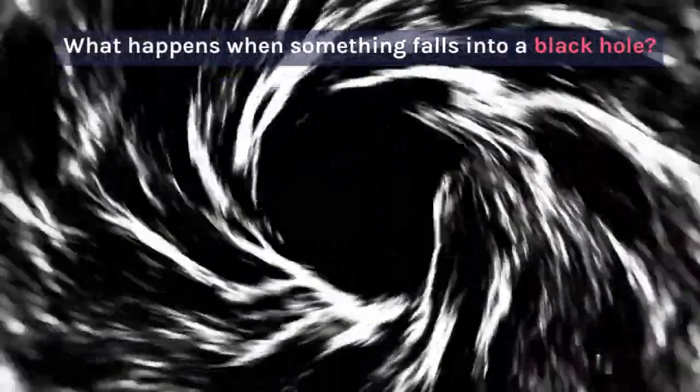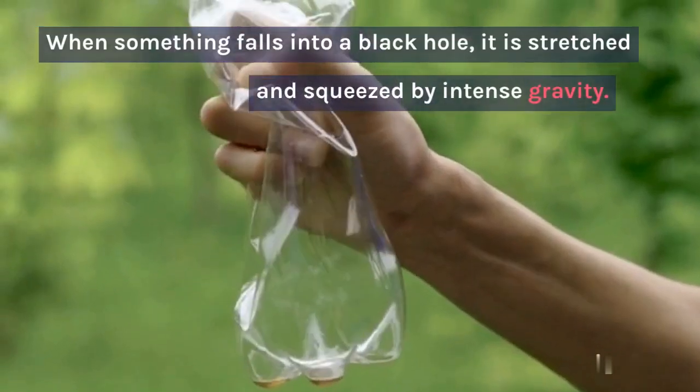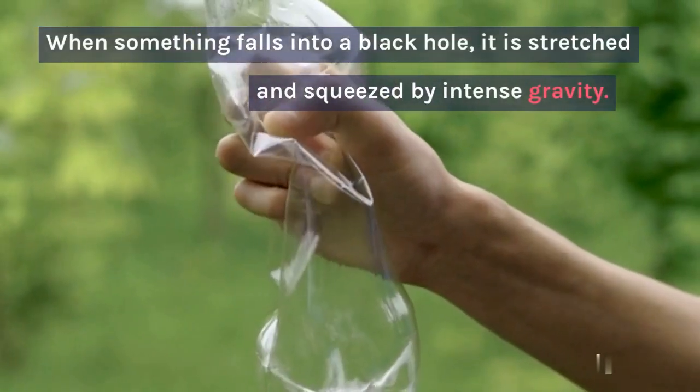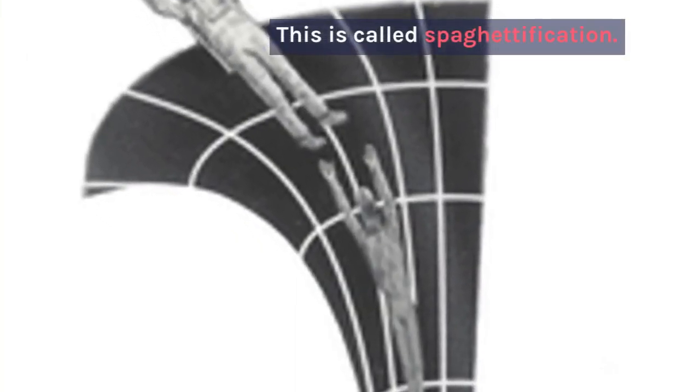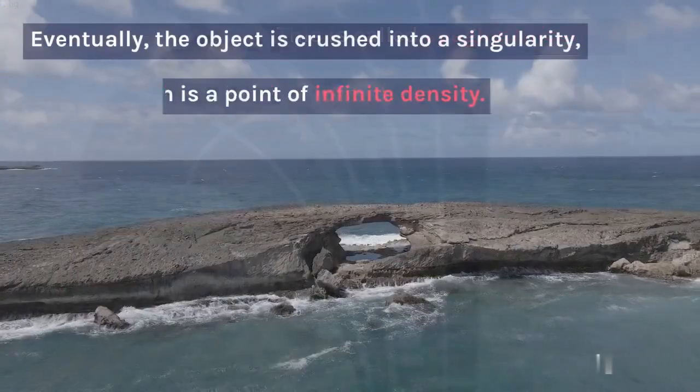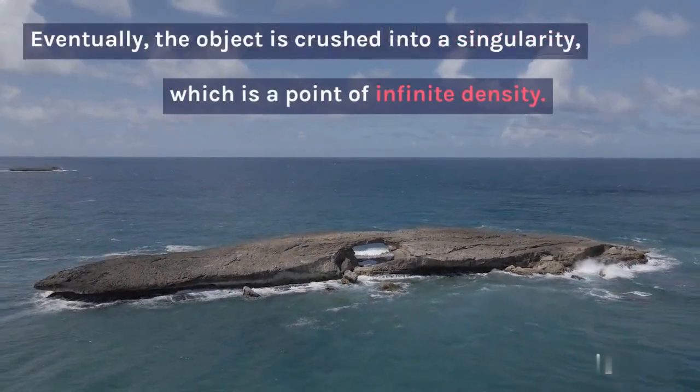What happens when something falls into a black hole? When something falls into a black hole, it is stretched and squeezed by intense gravity. This is called spaghettification. Eventually, the object is crushed into a singularity, which is a point of infinite density.